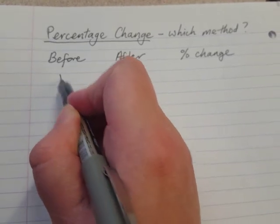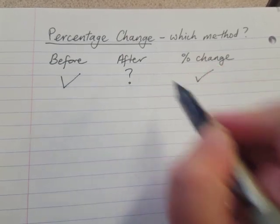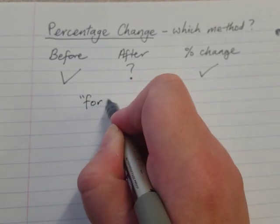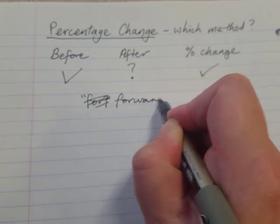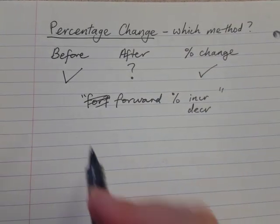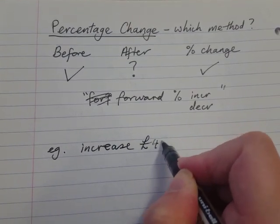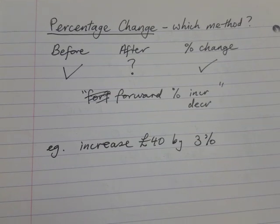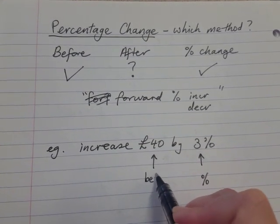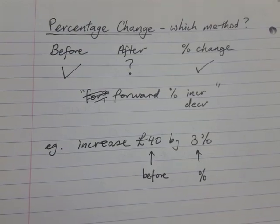The first type of question is where the question tells you how much you had before the change, tells you what percentage it is, and you have to work out what was the amount afterwards. I'm going to call these forward percentage increase or decrease questions. An example: you have £40 and I want to increase £40 by 3%. That's the percentage change — we know it's an increase, £40 is the amount before, and you have to find the amount afterwards. That's your Type 1: forward percentage increase or decrease.